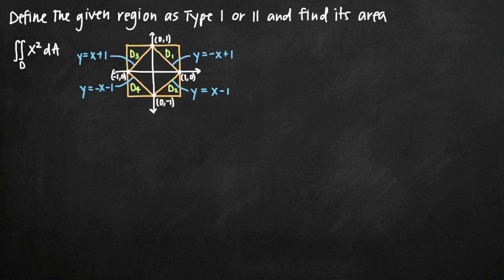Today we're going to be talking about type 1 and type 2 regions and how to use double integrals to find the area of regions defined as type 1 or type 2. In this particular problem we've been given the double integral of x squared over this figure, which is an area defined by four separate triangles. I've labeled the different regions d sub 1, d sub 2, d sub 3, and d sub 4. We'll find the area of each triangle individually and then add them together.